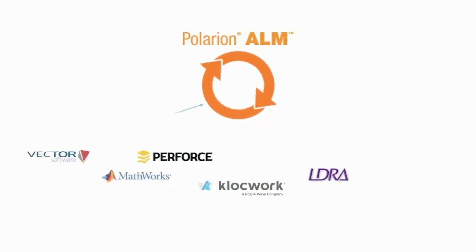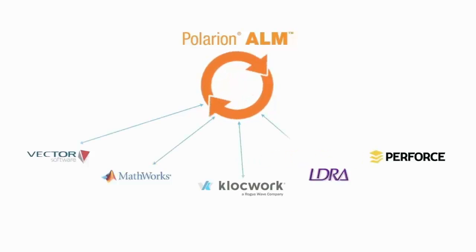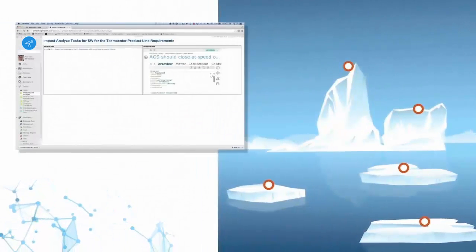Polarion ALM provides robust connectivity and interchange with a wide variety of third-party vendors, including MathWorks, Vector, Clockwork and LDRA. With Polarion, your ALM and PLM work hand-in-hand as one cohesive ecosystem.